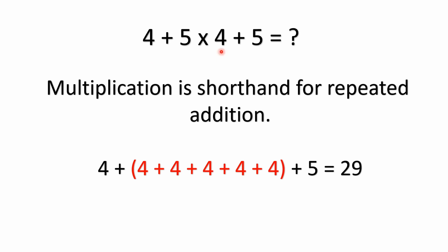There's nothing wrong with writing the problem out as 4 plus 5 times 4 plus 5. We don't know what this equation might be representing — it could be something like selling items, and the answer of 29 would represent, say, how much you've sold. So I hope this explanation has been helpful. I do have more videos covering order of operations, and if this has been helpful, please consider liking, sharing, and subscribing. I look forward to seeing everybody in the next video.